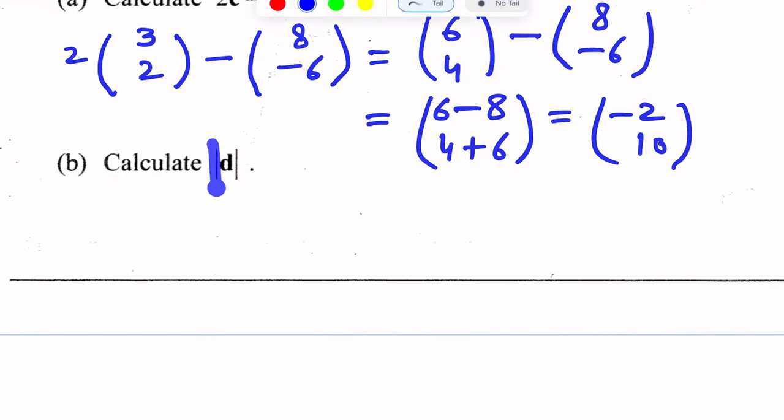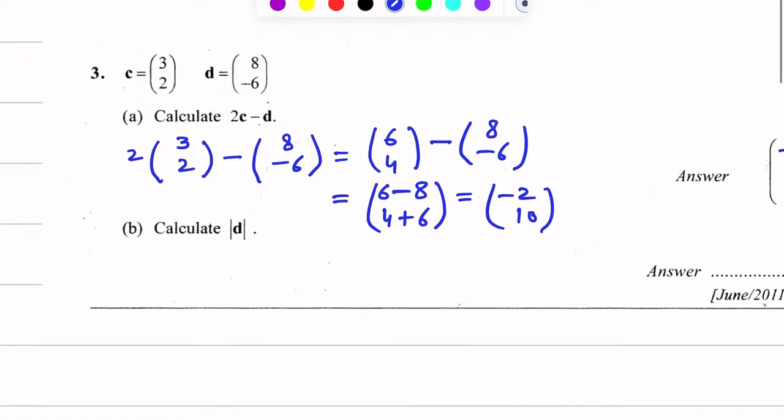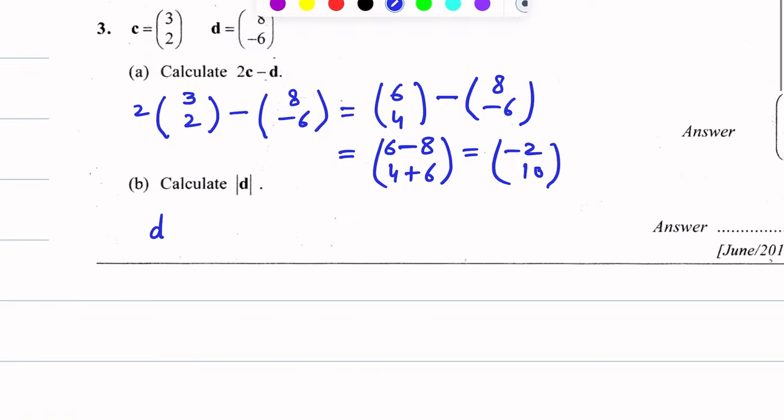Magnitude of d. The magnitude means length of vector d. How to find the length of this vector? These two lines show magnitude or length of this vector. So this is |d|.